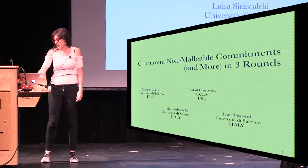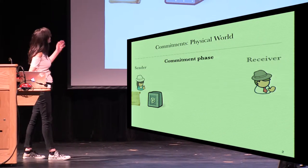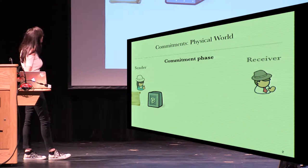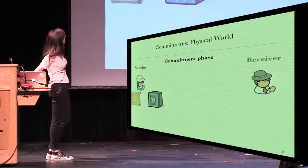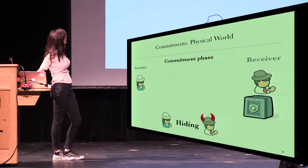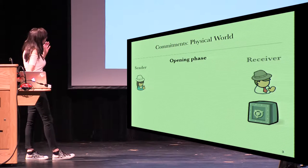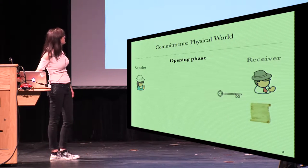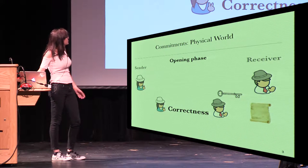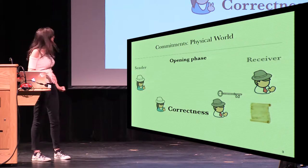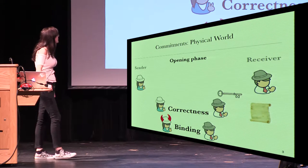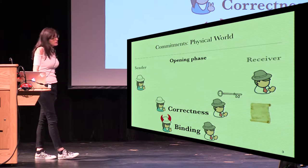Let's start with the commitment scheme. A commitment scheme is a game between a sender and a receiver. When a sender puts a message inside the safe, the safe is sent to the receiver. The hiding property ensures that the receiver cannot know the message inside the safe. In the opening phase, the sender sends the key to the receiver and reveals the correct message. The correctness property ensures that if both parties follow the protocol, then the receiver gets the correct message. The binding property ensures that the sender cannot open the safe in two different ways.